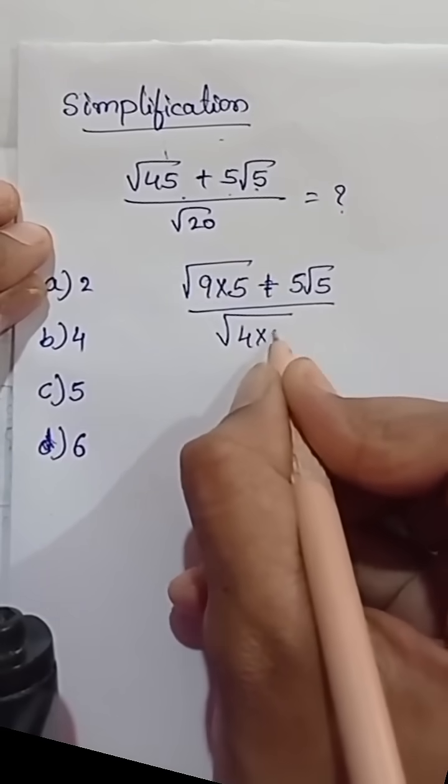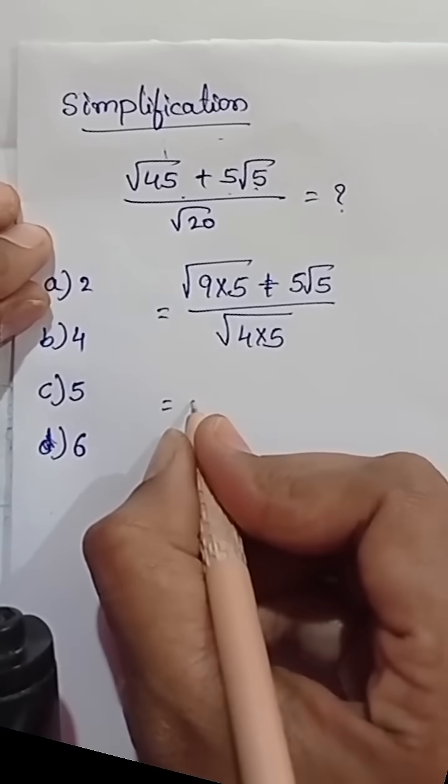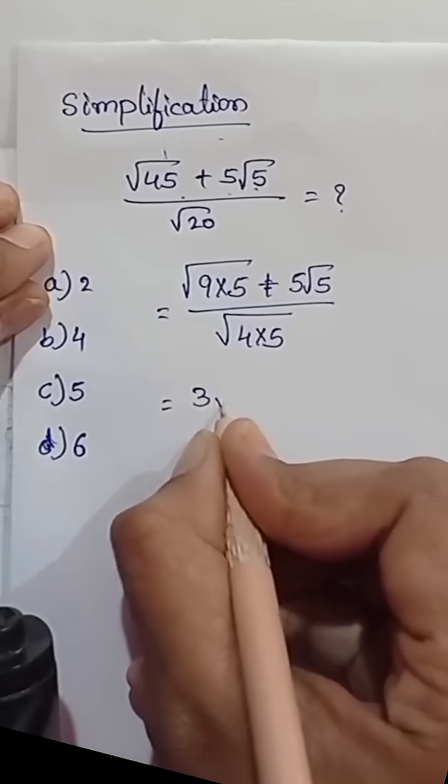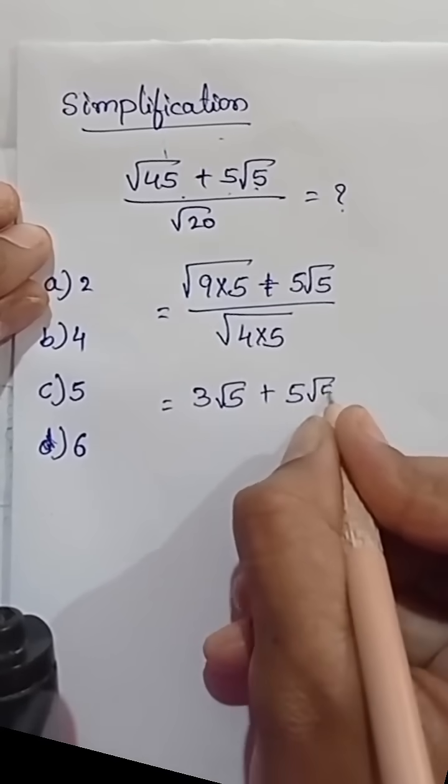Now we will separate these all the numerator and denominator, that is square root of 9 into square root of 5. Square root of 9 is nothing but 3, directly I am writing here, plus 5 square root of 5, and in the denominator square root of 4 into square root of 5. That square root of 4 is nothing but 2 square root of 5.